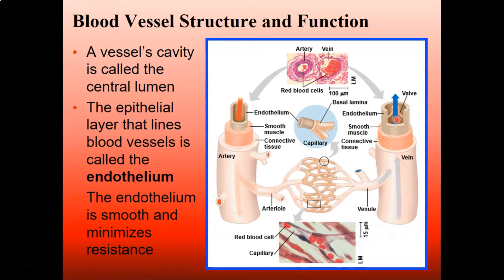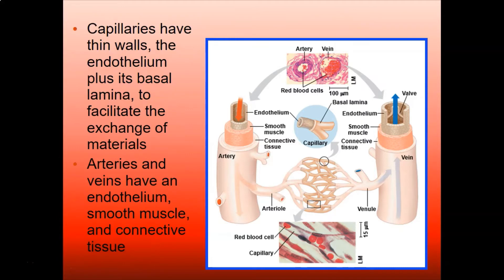The endothelium is smooth, and this minimizes resistance — your blood vessels are nice and smooth and stretchy for the most part. Capillaries have very, very thin walls: they have that endothelium plus a basal lamina.